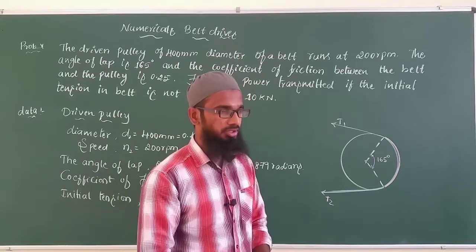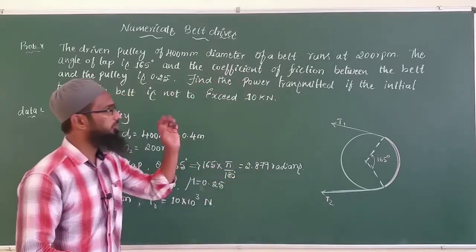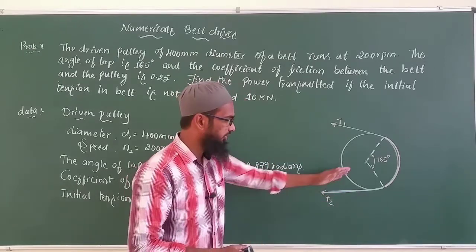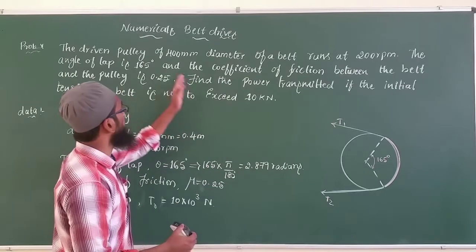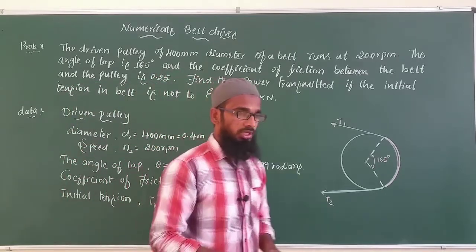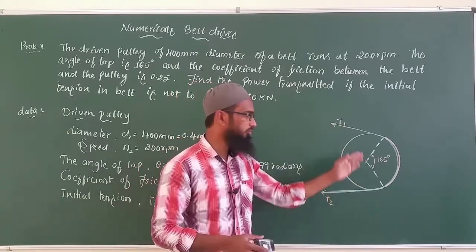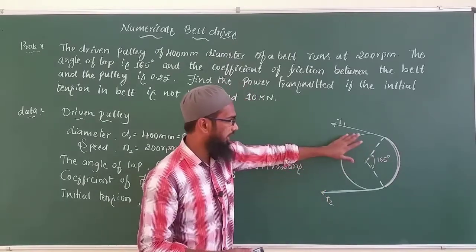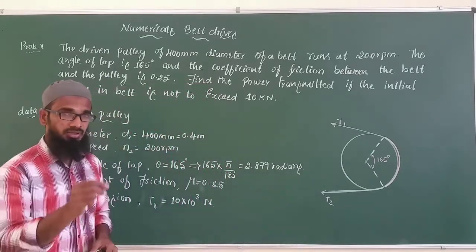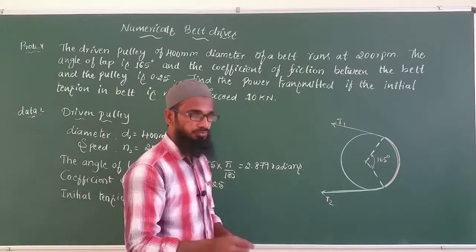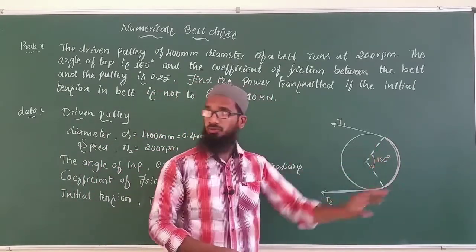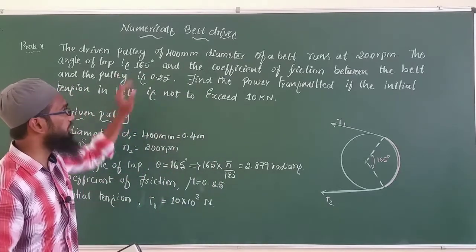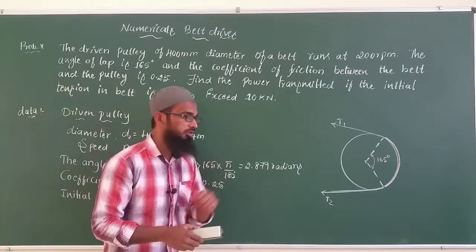In this problem, the driven pulley is given, which runs at a speed of 200 rpm. The diameter of the driven pulley is 400 mm. The belt drive is connected, and the coefficient of friction between the pulley and the belt is given as μ = 0.25. The belt is in contact with the driven pulley at an angle of 165°, which is the angle of lap.